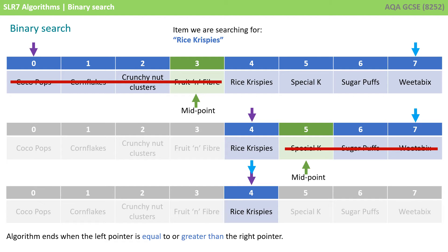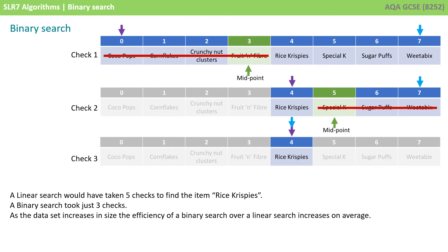When the left and right pointers are the same value, the item we're looking for is either at the pointer or it's not in the list. With a linear search, by starting at the first item and checking every item until we find the one we're looking for, we would have performed 5 checks. With a binary search, we performed just 3. As the lists get bigger, on average, the time it takes a binary search to find the item will be lower than the linear search. So the binary search is generally considered a better algorithm, providing the order of the items in the list can be maintained.